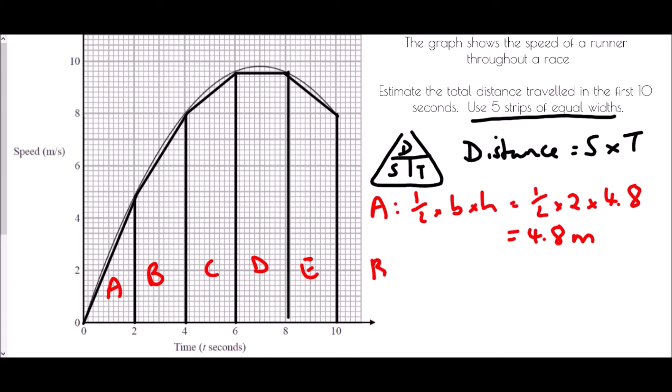Now, B is a trapezium. And so for a trapezium, we need to remember our formula for a trapezium. It is a half, brackets, A plus B, H. And what that is, A is the length at the top, and B is the length at the bottom. And the height is the perpendicular height.